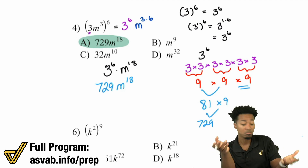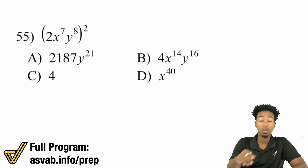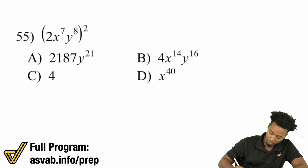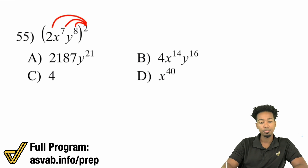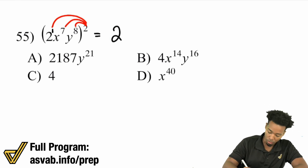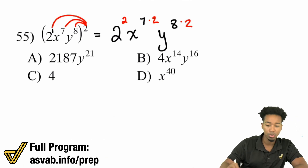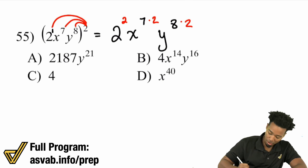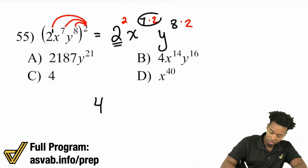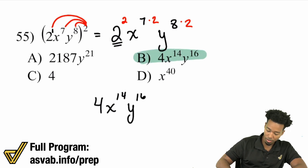Now I'm going to take us through some more hefty examples. Let's check out problem number 55. What we see is everything in a parenthesis raised to the power of 2 outside. We're going to replace every exponent and multiply it by 2. The 2 was to the power of 1, so that becomes 2 to the power of 2. The x is to the power of 7 — multiply that exponent by 2. And y to the power of 8 — multiply that by 2 as well. 2 squared is 4; 7 times 2 is 14, so x to the power of 14; 8 times 2 is 16, so y to the power of 16. Final answer is B.